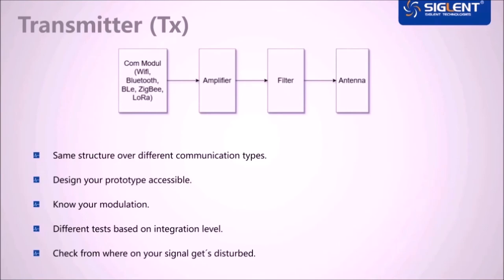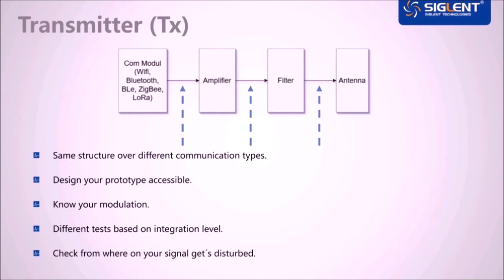Now that we've established that each of you probably has completely different hardware, let's take a look at the basic structure of a transmitter. At the front, there is always some type of transceiver that modulates the data according to the protocol and then forwards it to the amplifier. Then, usually, there is some kind of filter and, of course, an antenna. When you are developing such a product, try to make as many test points as possible accessible, at least within the prototype. For example, you can create a second PCB with your antenna design or an optional SMA connector on a trace between two components. The goal is to be able to capture as many signals at as many points as possible.